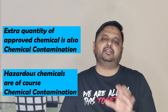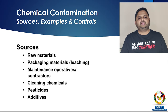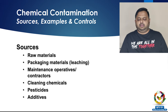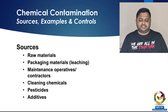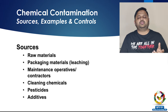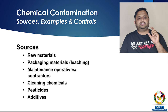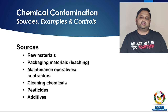Anything additional beyond the allowed limit is also chemical contamination, and anything hazardous entering food in the chemical category is chemical contamination. The sources can be from raw materials, packaging material, maintenance operations like oil and grease, cleaning chemicals, pesticides, and additives. Additives are chemicals allowed in the food industry, like food colors, but only in certain quantities — exceeding those quantities is also chemical contamination.